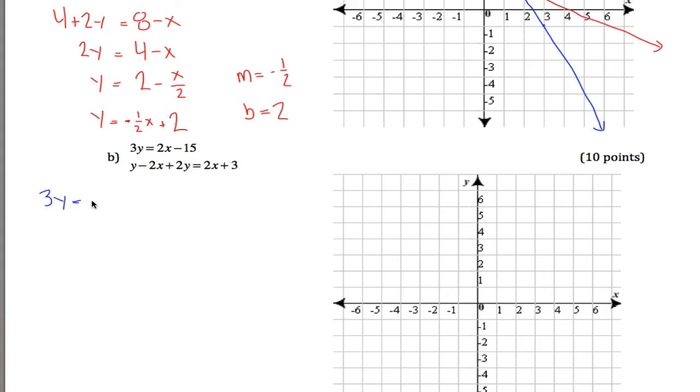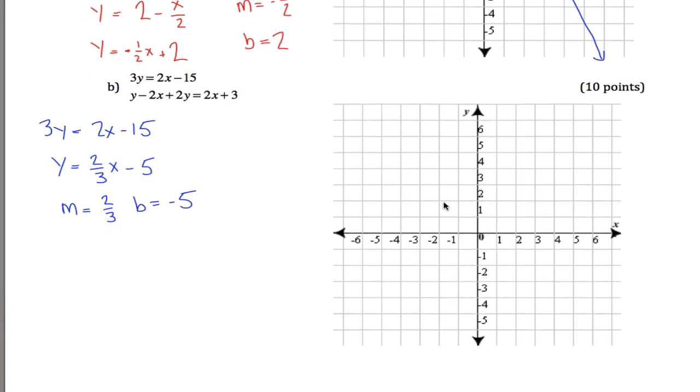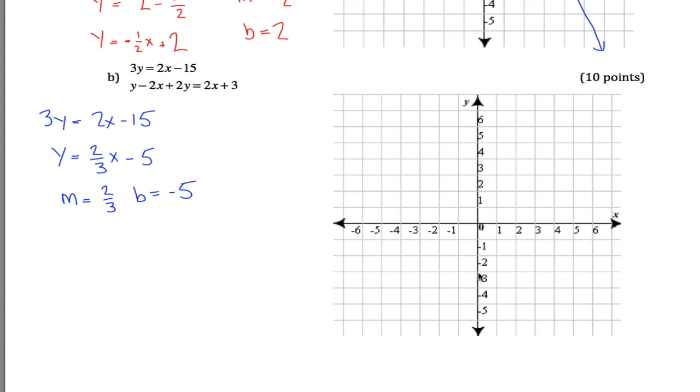3y equals 2x minus 15. I want to solve for y to get it into y equals mx plus b form, and to do that I have to divide by 3. If I divide everything by 3, this becomes 2 thirds x and 15 divided by 3 is 5. So I get that my slope is 2 thirds and my y intercept is negative 5. In other words, 1, 2, 3, 4, 5, that's one point on my graph.